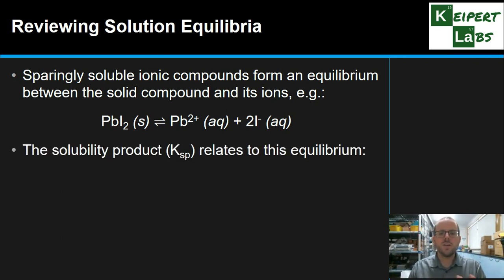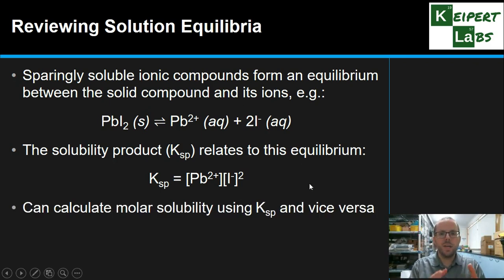We can use the solubility product or Ksp as an expression that allows us to calculate the concentration of each of these ions in the equilibrium. We can use the Ksp expression like so, remembering to raise each one to the power of its coefficient. And then that means that we can use this value to calculate the molar solubility, how many moles of this compound will dissolve for every litre of solvent and vice versa. So we know that this is a relationship that exists. We know that these compounds dissolve even just a tiny bit, but they're in equilibrium with the solid that's there and that we can make calculations involving these.